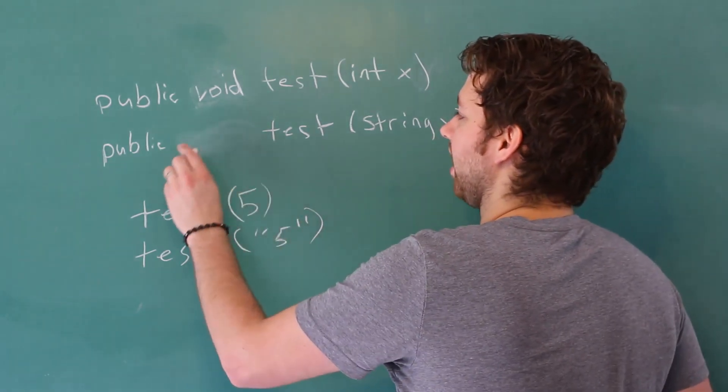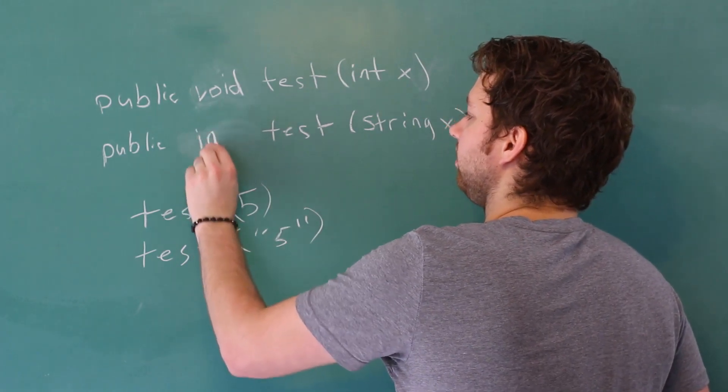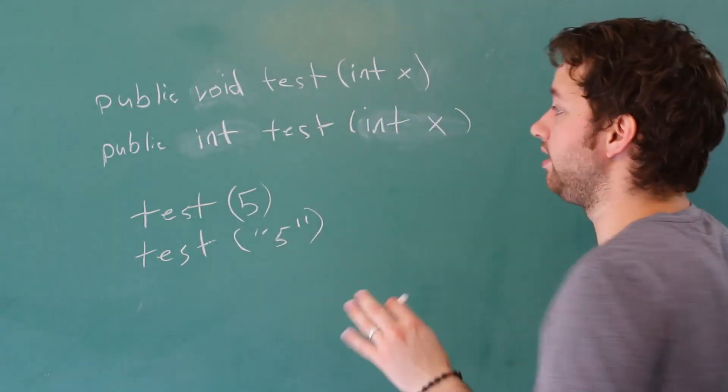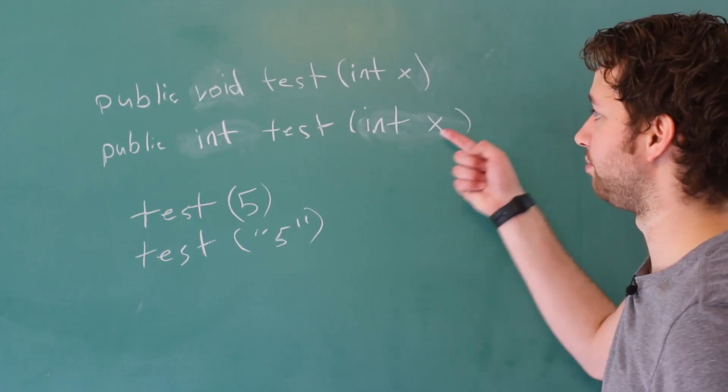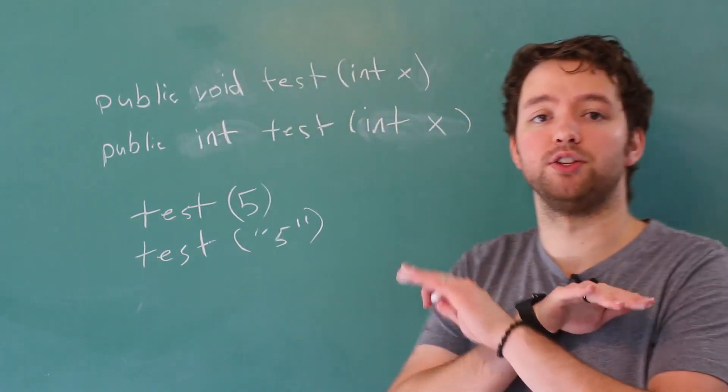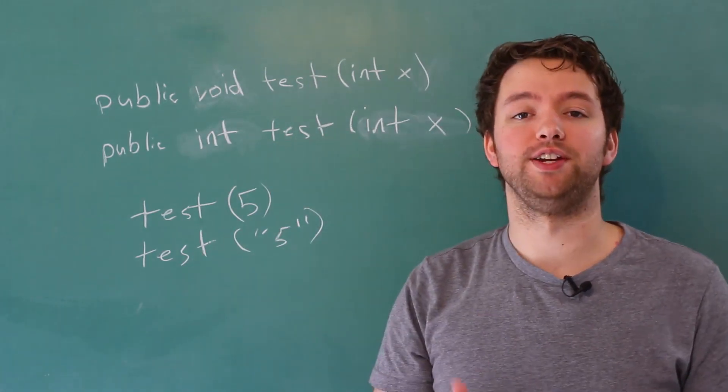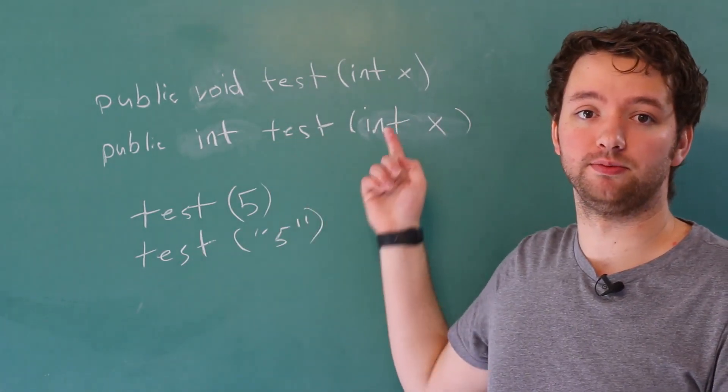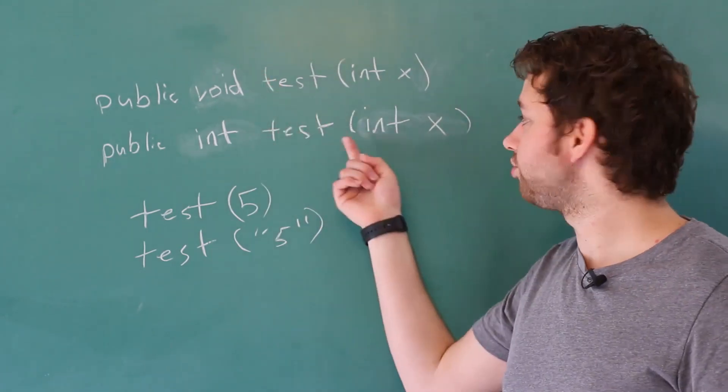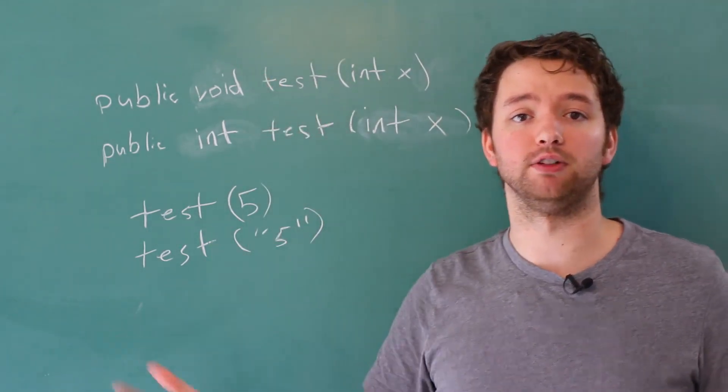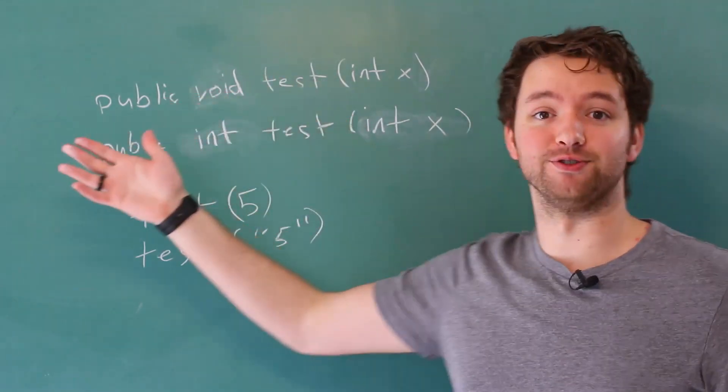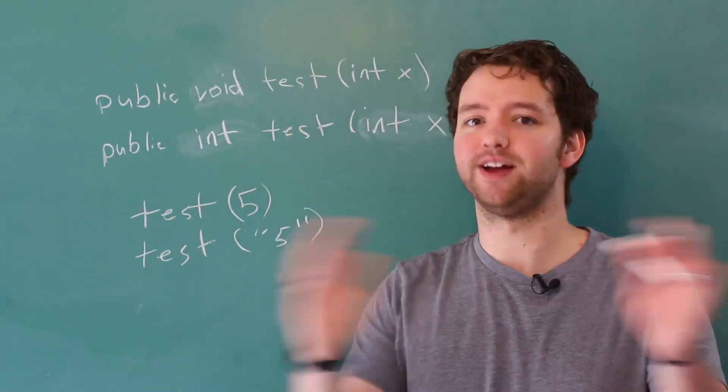So if we had int here and int x here, you can see these are the exact same parameters, they have the same name, just different return types. This would not work, this would not be a valid overload. So you're going to need to change it at the parameter level. If you need to do something like this, just change the name of this method and don't make it an overload. You could have test returns void and test returns int or whatever you want to do.